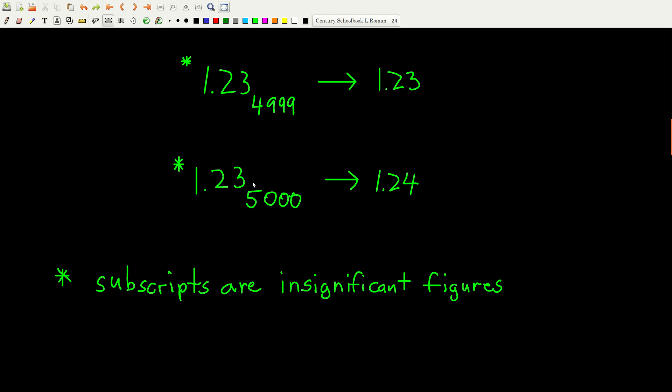Now, if it's five or bigger, then you round up. So in this number here, 1.23, three sig figs, my first insignificant figure is five. Five or bigger, I round up. So this I'd write as 1.24.